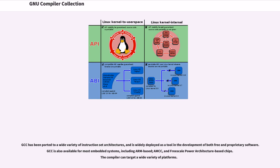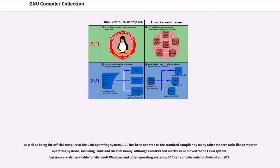GCC has been ported to a wide variety of instruction set architectures, and is widely deployed as a tool in the development of both free and proprietary software. GCC is also available for most embedded systems, including ARM-based, AMCC, and Freescale power architecture-based chips. As well as being the official compiler of the GNU operating system, GCC has been adopted as the standard compiler by many modern Unix-like operating systems, including Linux and the BSD family, although FreeBSD and macOS have moved to the LLVM system. Versions are also available for Microsoft Windows and other operating systems, and GCC can compile code for Android and iOS.